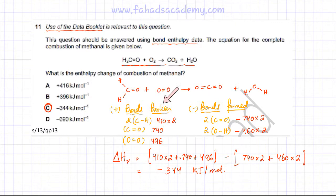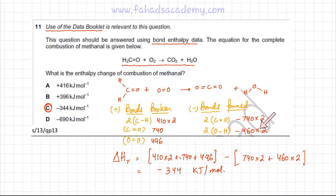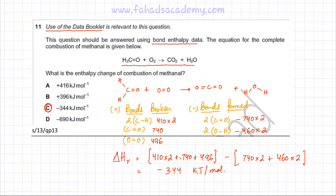The formula used is simply bonds broken minus bonds formed. One thing to be careful about is that recent data booklets have slightly different values for bond energies. Since this is a past paper question, the bond energies in a newer data booklet might be slightly different, so your answer could be slightly off compared to what's given here. Always be aware that newer data booklets may give different bond energy values.